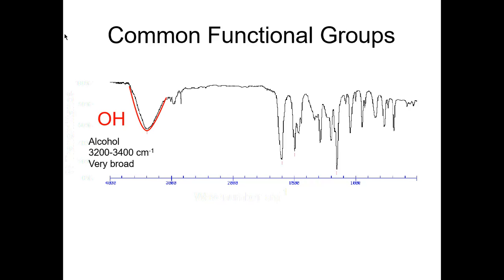The alcohol stretch always looks like a big broad lump. In FTIR it may be a little sharper, but it's always in that same region and always a very broad absorbance. That's one functional group every organic student should know.